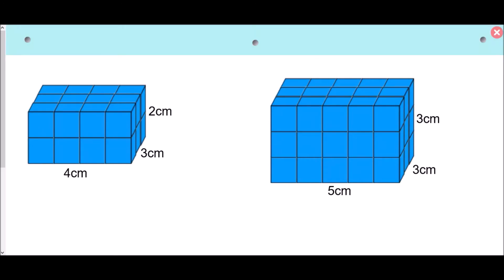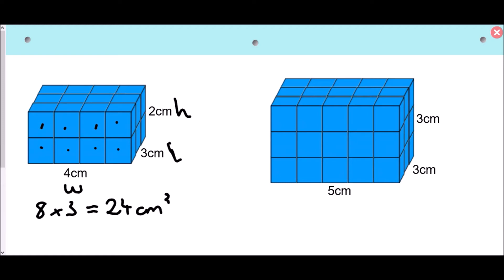Now let's look at finding the volume of some cuboids. Each of these diagrams is built up using single centimeter cubes. The first one has a width of four centimeters, a length of three centimeters, and a height of two centimeters. If we look at the front, we count one through eight cubes.